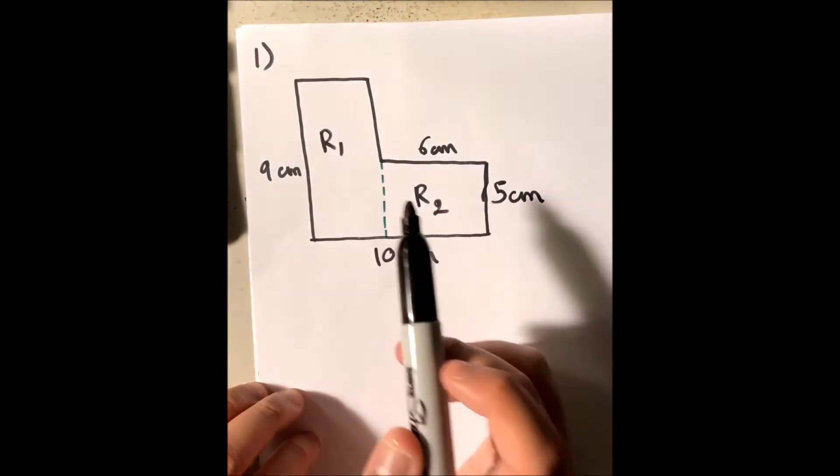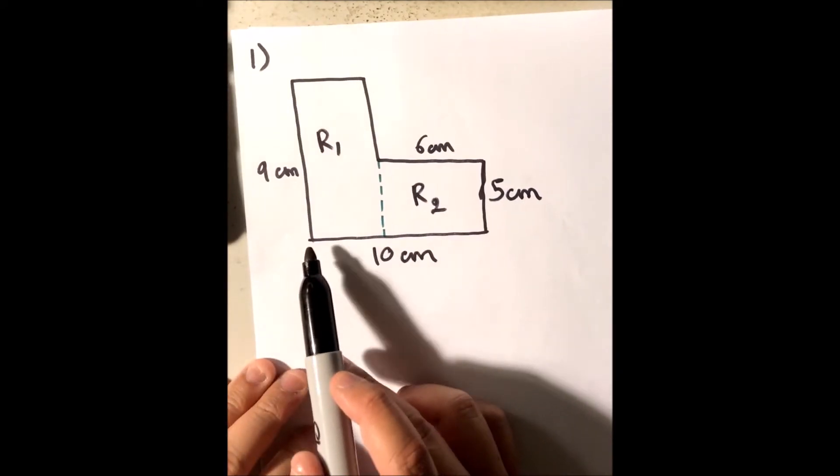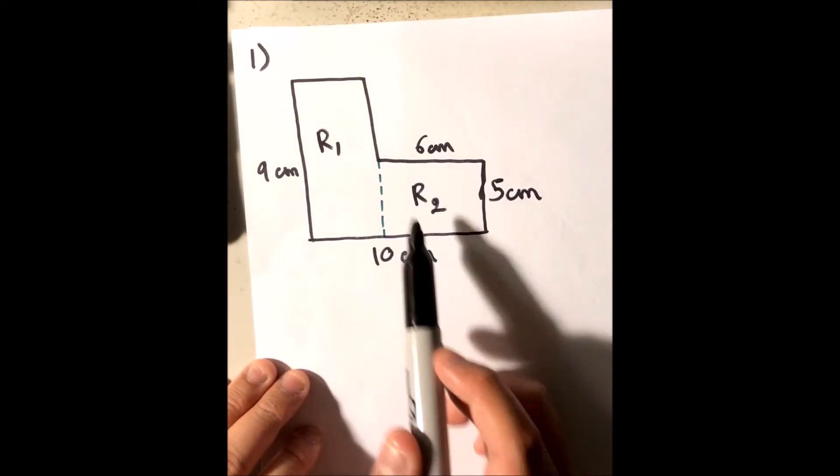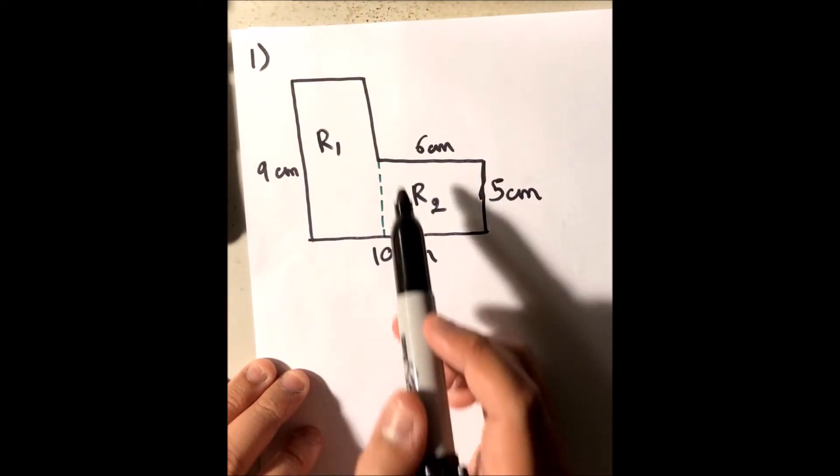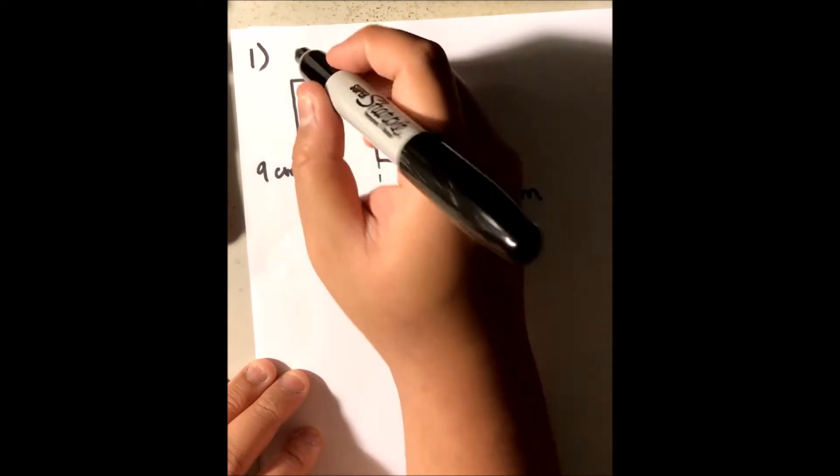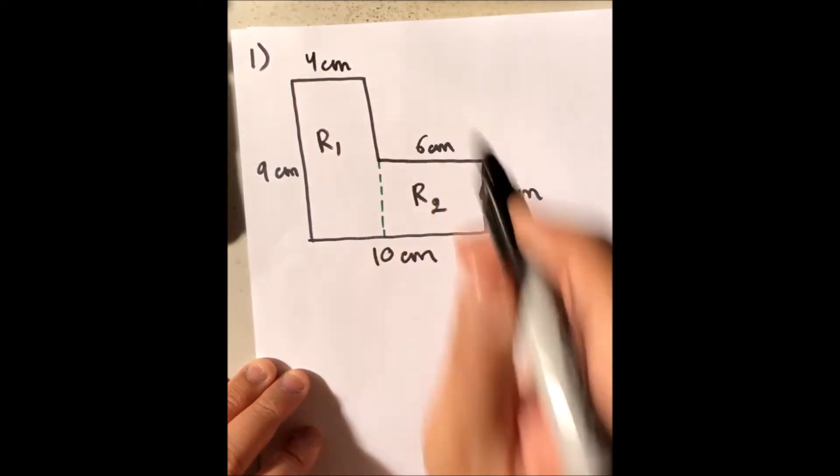This can be easily found by recognizing the fact that this parallel side of 10 centimeters is just the sum of this given one and this one. So if this is 10 centimeters and this is 6, what's left of it has to be 4. So this is 4 centimeters.